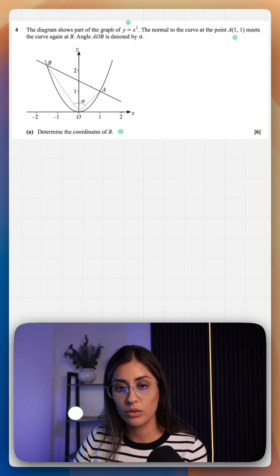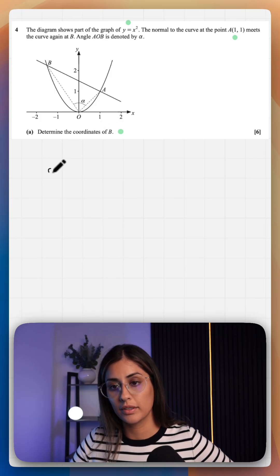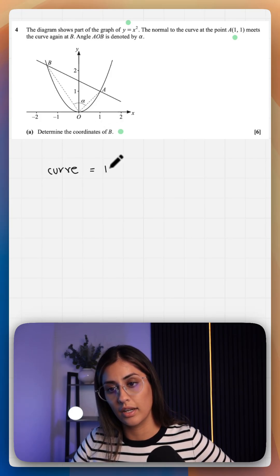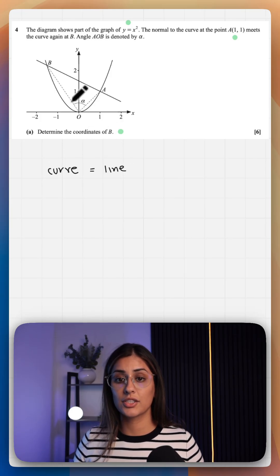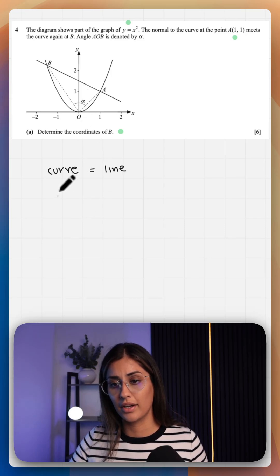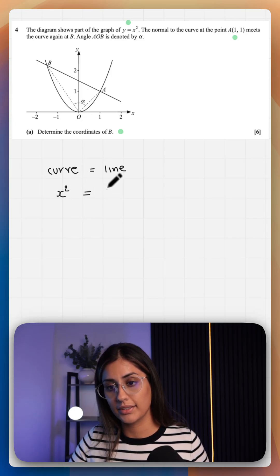So in order to find the coordinates of intersection, we need to know where the curve equals the line. And that coordinate of intersection is our B. So we know our curve, that's x squared. But what is our line? Let's work it out.